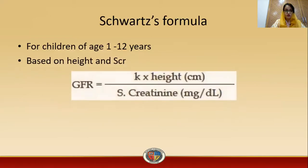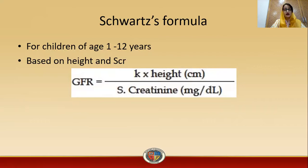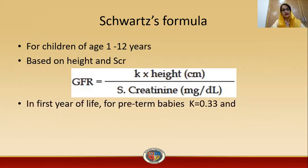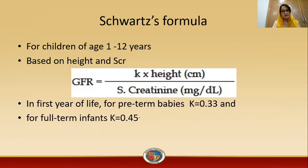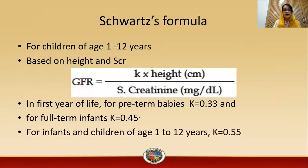The Schwartz formula is used for children aged 1 to 12 years and is based on height and serum creatinine level. The formula is: GFR = K × height (in cm) / serum creatinine (in mg/dL). The value of K varies by age: for preterm babies K = 0.33, for full-term infants K = 0.45, and for children aged 1 to 12 years K = 0.55.